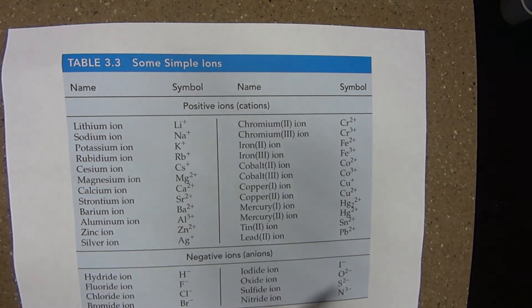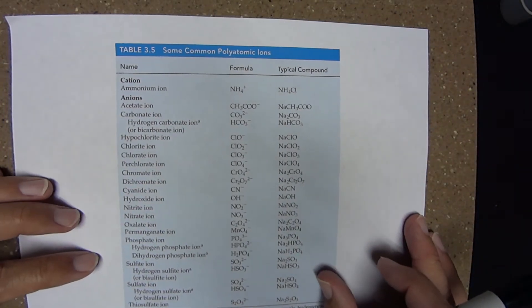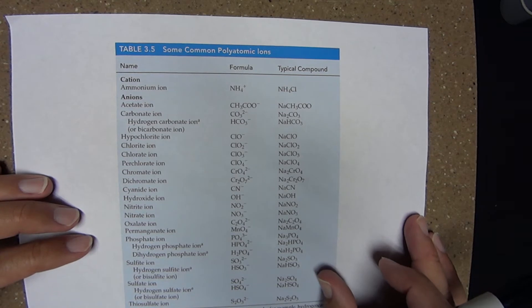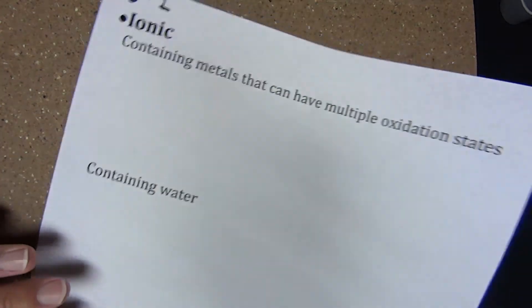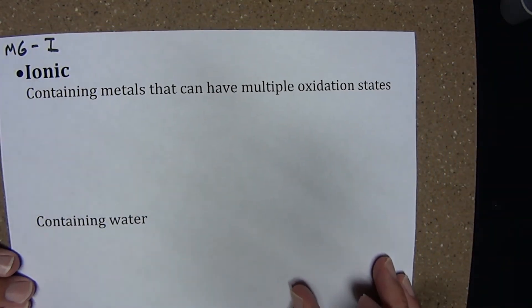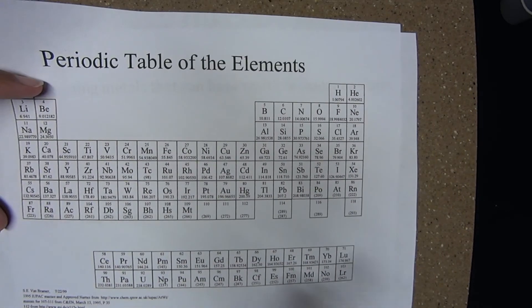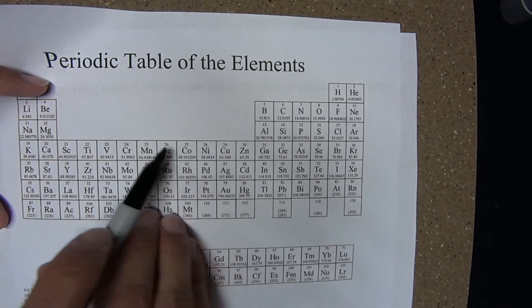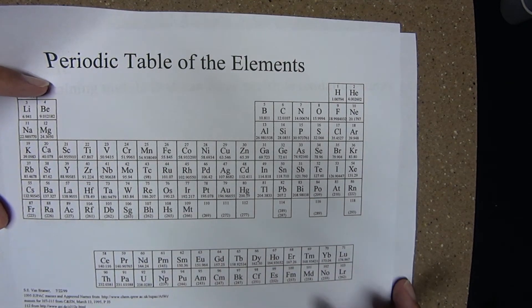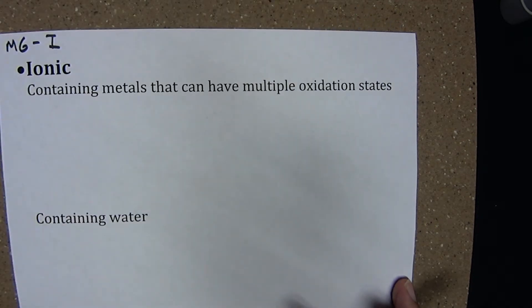Here you see some names for common ions, and here are some common polyatomic ions that you should know. Let's look at a few more categories: ionic compounds containing metals that have multiple oxidation states. Here we're primarily talking about the transition elements, which can have more than one oxidation state as a cation, and the name needs to reflect the specific oxidation state within that compound.